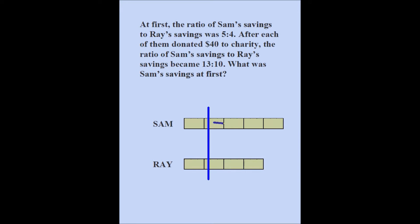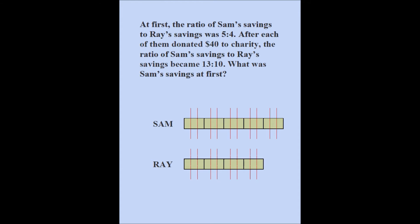After certain parts are given away, the difference between Sam's and Ray's remaining parts has to be 3, because 13 minus 10 is 3. That tells me I'm going to cut each part into 3 equal parts, so that the difference between Ray's and Sam's amount is 3. I cut each portion of each person into 3 equal parts — why 3? Because 3 is the difference in the ratio of the two amounts: 13 minus 10 is 3.